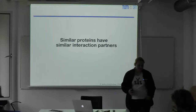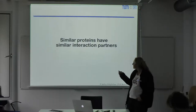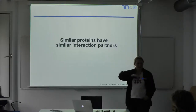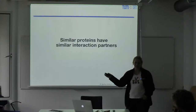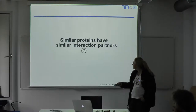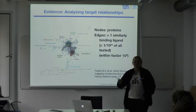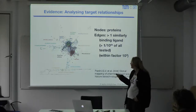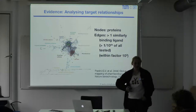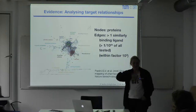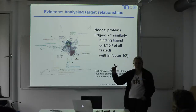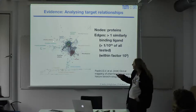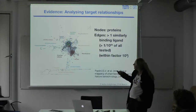For the function prediction part, an interesting observation is that similar proteins have similar interaction partners. Because if that is true, then if you find a similarity in the protein, you would be able to infer a similarity in the thing it does. Some people have made the effort of trying to challenge this hypothesis and find out whether it's true.